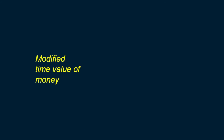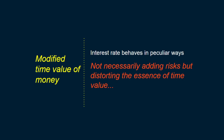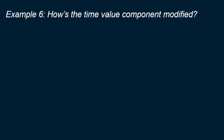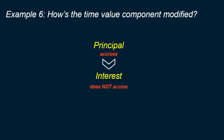Now we'll talk about the time value of money being modified. 'Modified' is what they call it if the interest rate behaves in peculiar ways without necessarily exposing the lender to any additional risks. For example, if an original loan has interest and principal to be paid on predefined dates, and yet if interest is not paid timely the interest doesn't accrue additional interest — meaning there is no interest on interest — then the time value of money component will be considered modified.